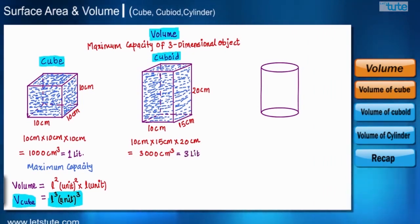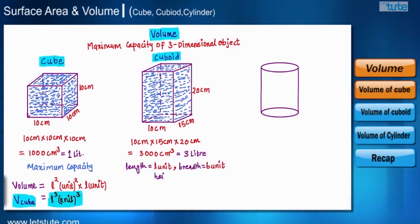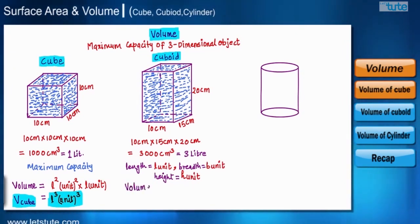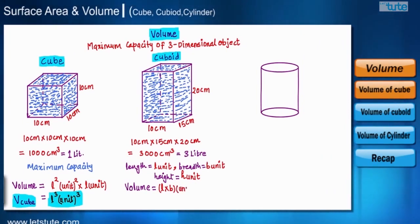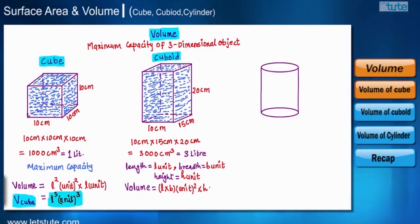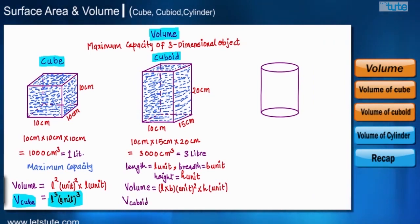Let's generalize: take length as l, breadth as b, and height as h, since all dimensions are different. The bottom surface is rectangular, so the area of the base is l × b. Multiplying by the height h gives the volume of the cuboid. The general formula is: Volume of cuboid = l × b × h unit cubed.